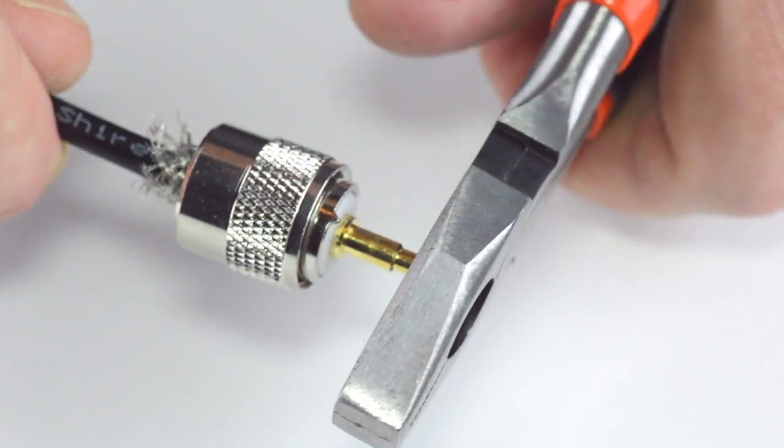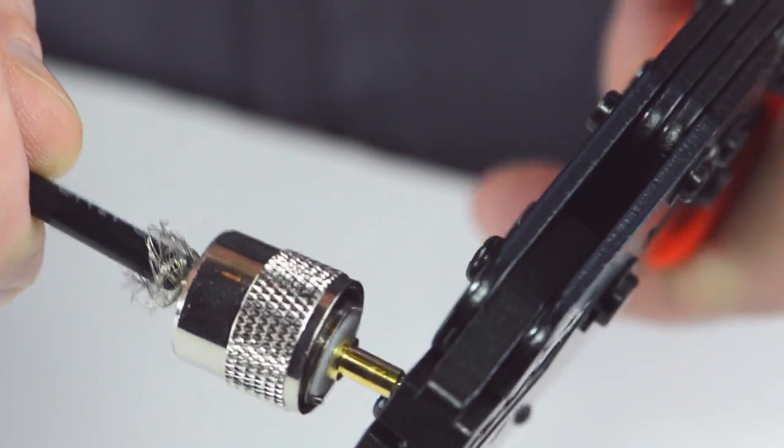Then, trim off any excess conductor. Crimp the center pin at the narrow end point to make termination to the center conductor.